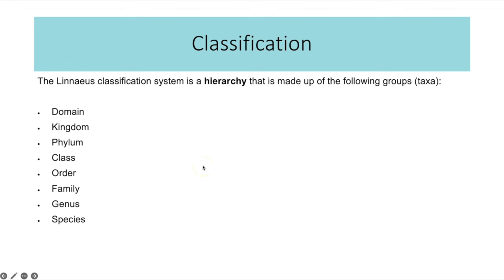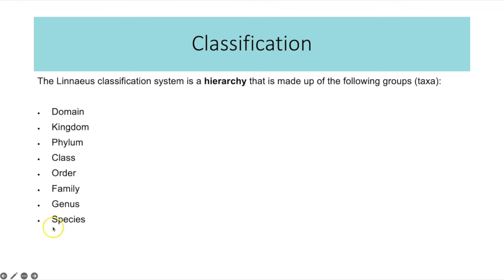Here is the Linnaeus classification system, which is based on a hierarchy. The taxa in order are: domain, kingdom, phylum, class, order, family, genus, and species. You need to remember all of these names and their order. A common mnemonic is 'Does King Philip Come Over For Good Soup?' which helps you remember the order. You just need to remember all those different names of the taxa.